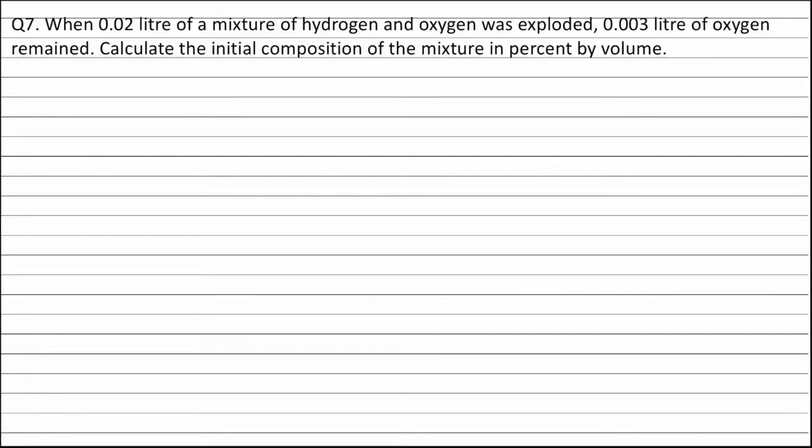Question 7. When 0.02 litre of a mixture of hydrogen and oxygen was exploded, 0.003 litre of oxygen remained. Calculate the initial composition of the mixture in percent by volume.